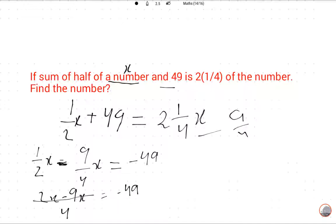Now we will cross multiply. Minus 7x is equal to minus 49 multiply by 4.